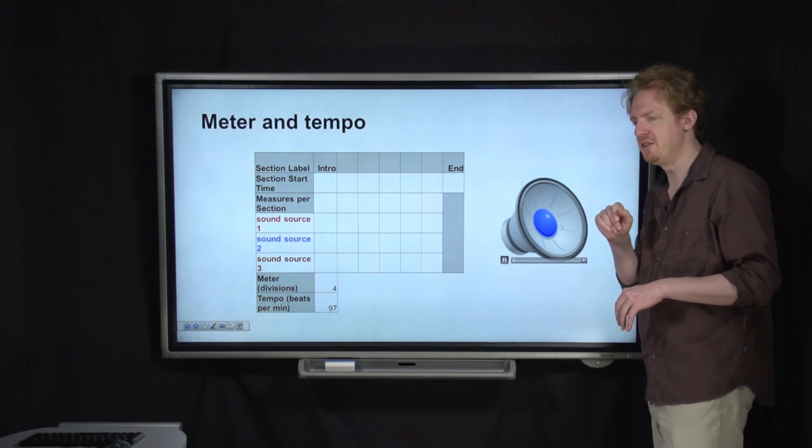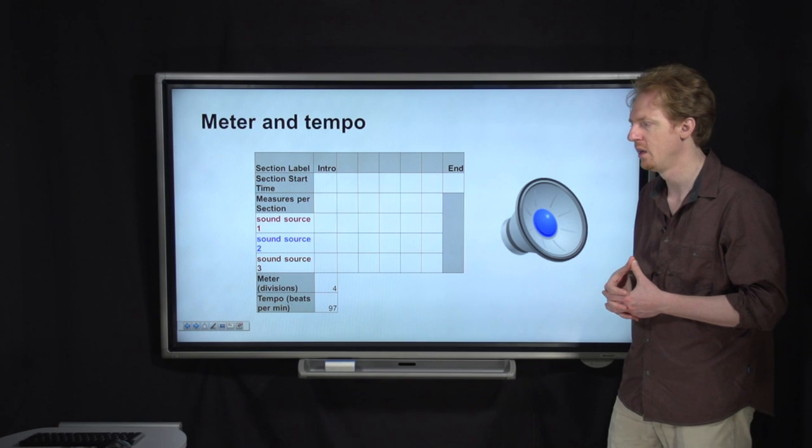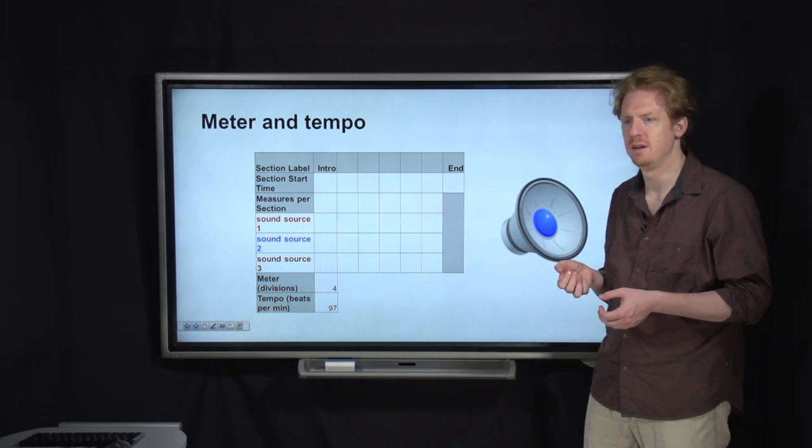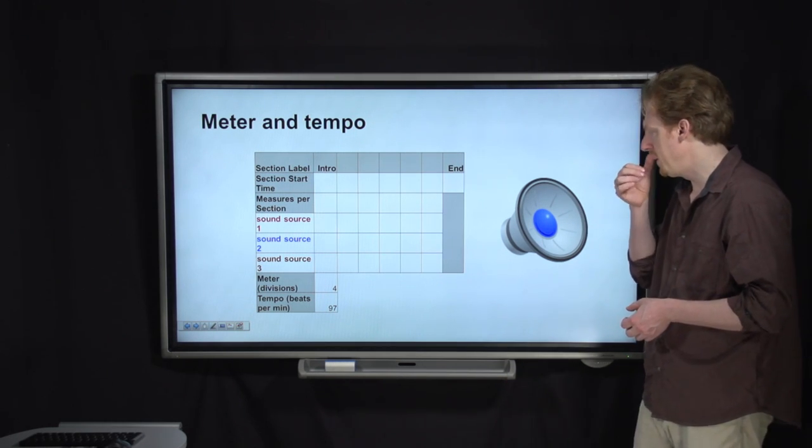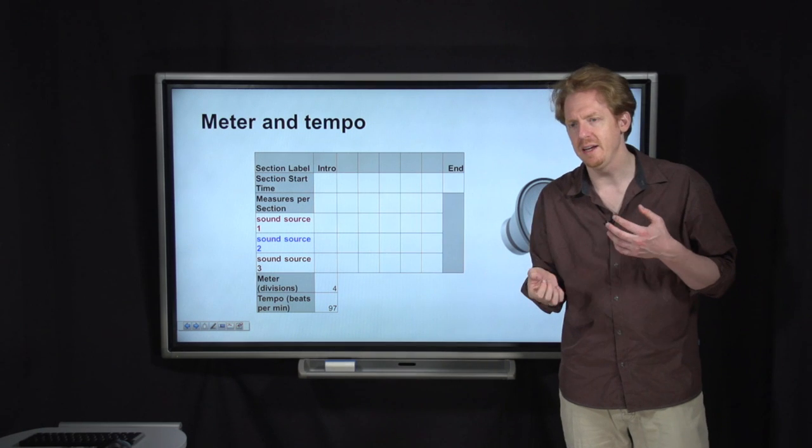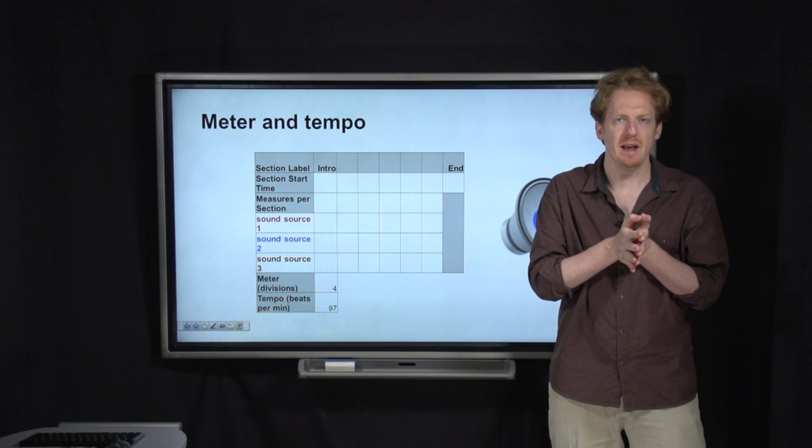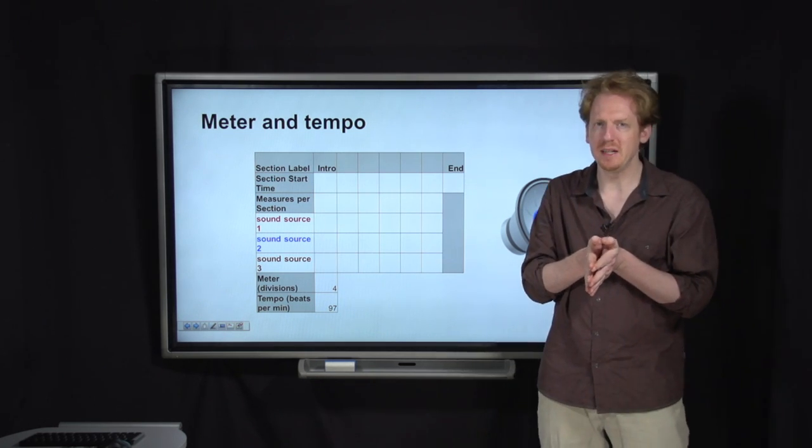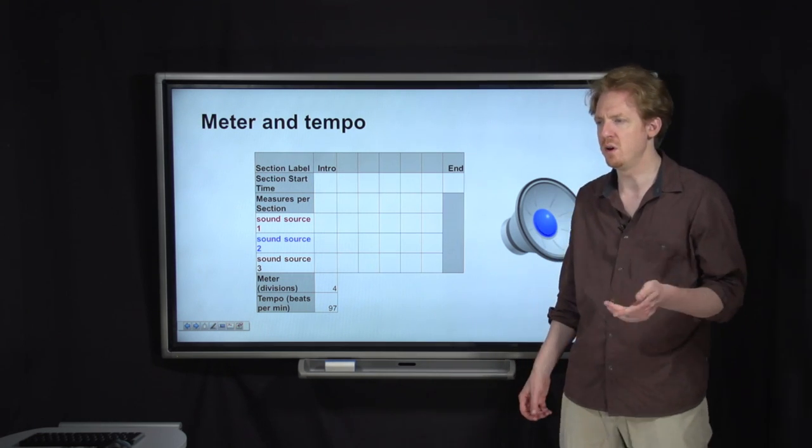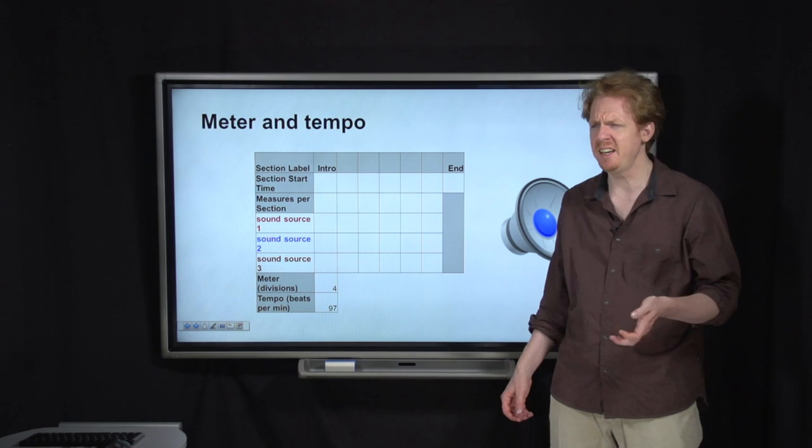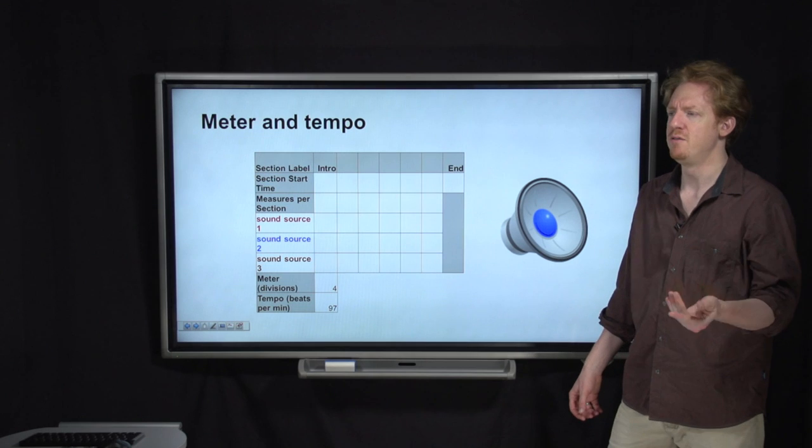And we're going to determine what that is right now by listening to a short piece of the song. So see if you can count along. So sledgehammer, like 99% of pop songs is in what we call 4-4 time. And all that means is that each measure has four beats in it. So as you're counting along, you're going 1, 2, 3, 4. 1, 2, 3, 4, et cetera.